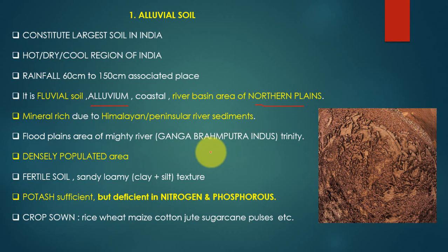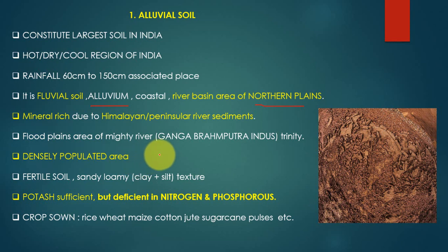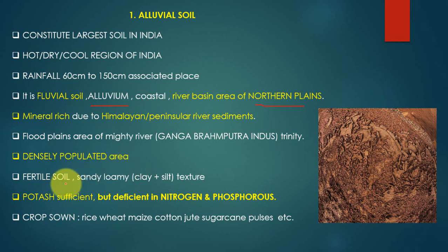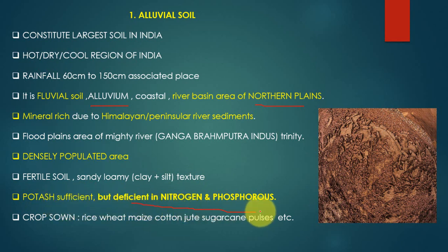This soil is also found in densely populated areas. These areas are also known as the cradle of civilization, as the Indus Valley Civilization was found along the Sindhu River. This soil is fertile, sandy loamy in texture, with a composition of clay plus silt. This soil is sufficient in potash but deficient in nitrogen and phosphorus.